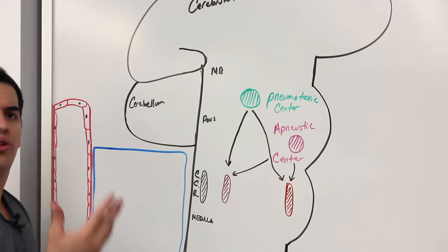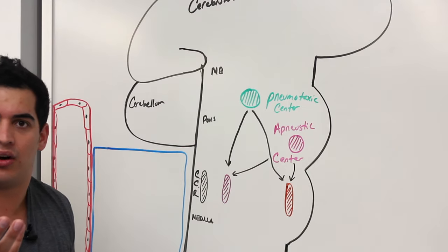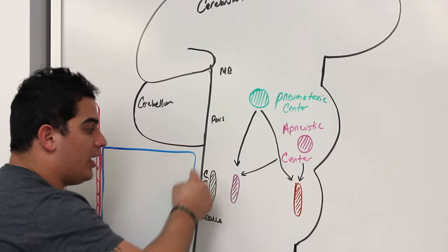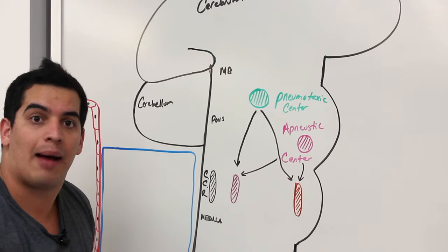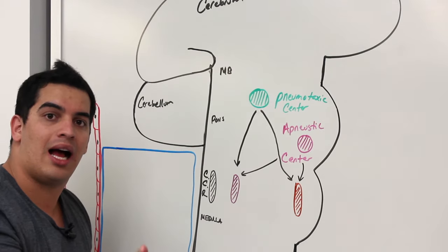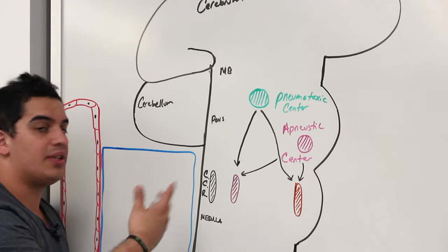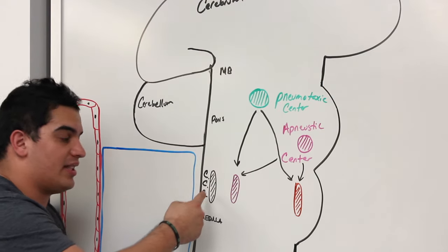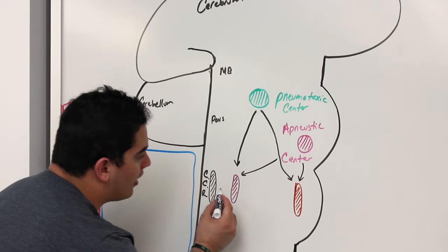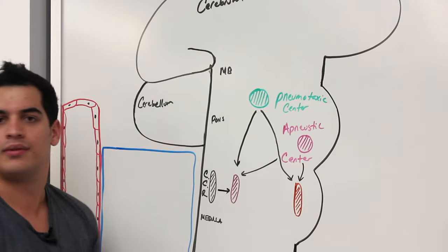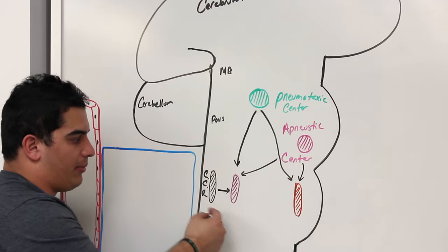Whenever CO2 levels rise, it increases carbonic acid, which increases protons and bicarb — that could stimulate the central chemoreceptors. Whenever CO2 levels drop — hypocapnia — it decreases the amount of carbonic acid, decreases the amount of protons being formed, and inhibits these centers. This is important because it can influence the respiratory centers.